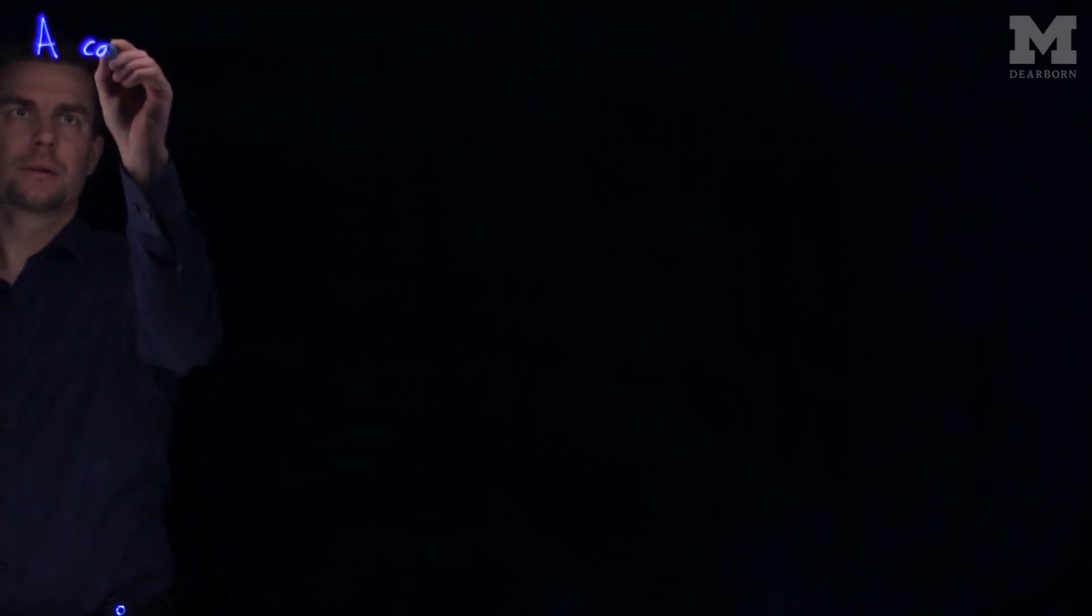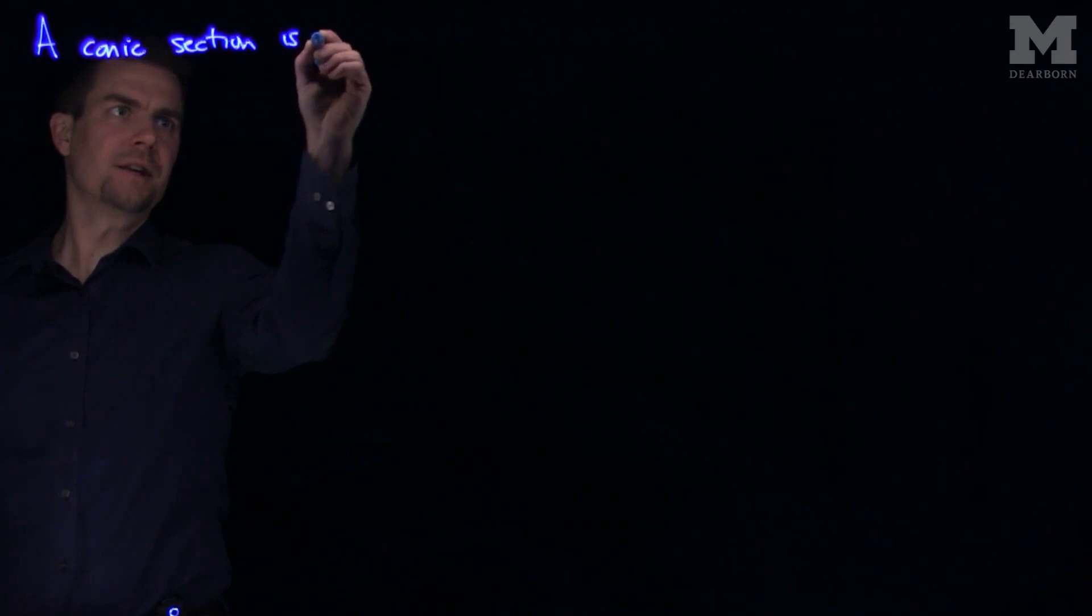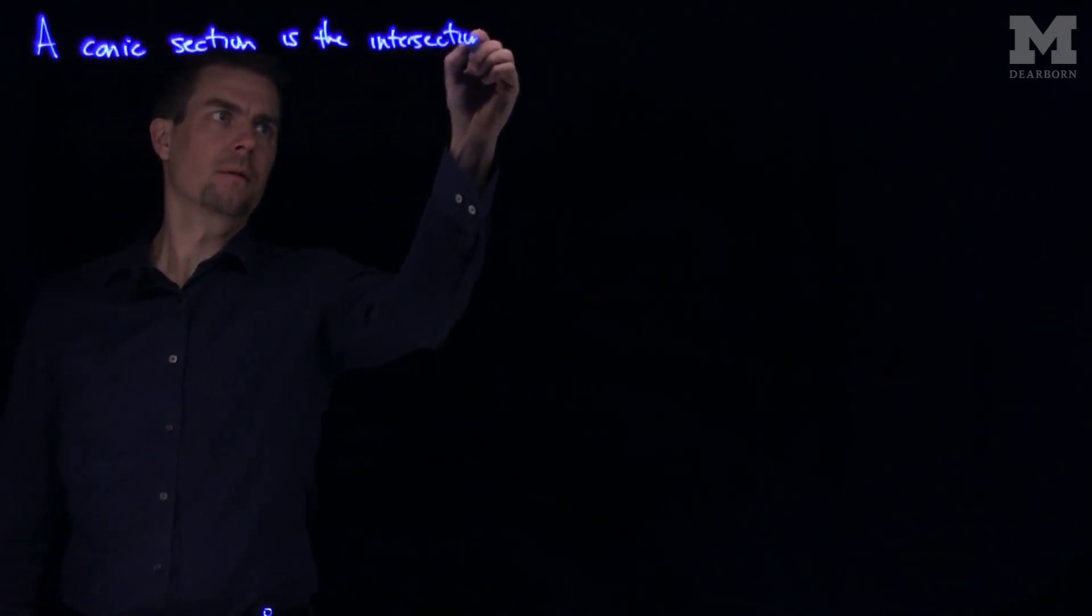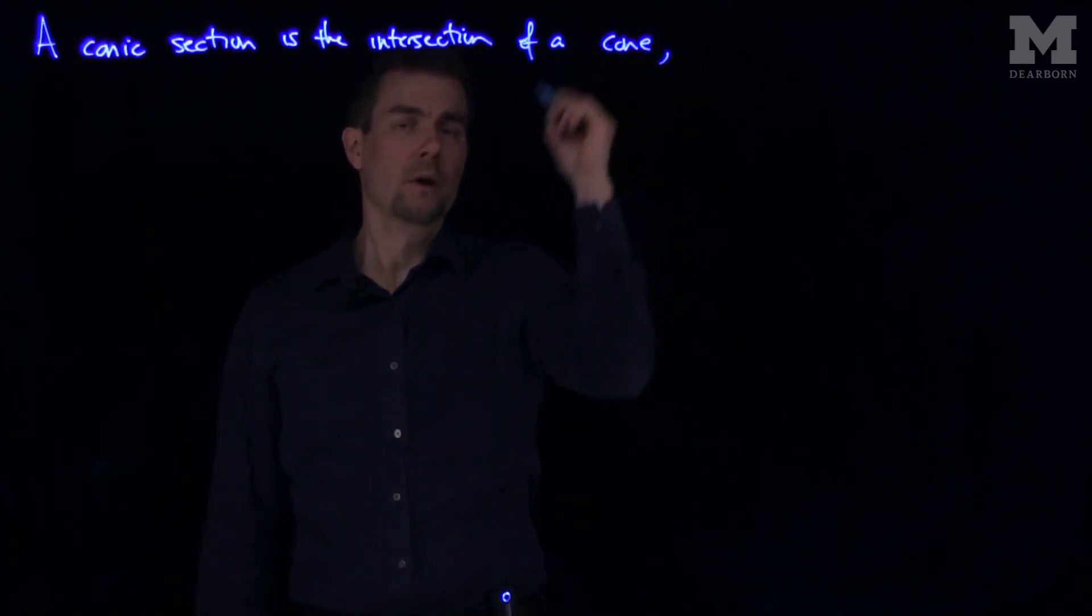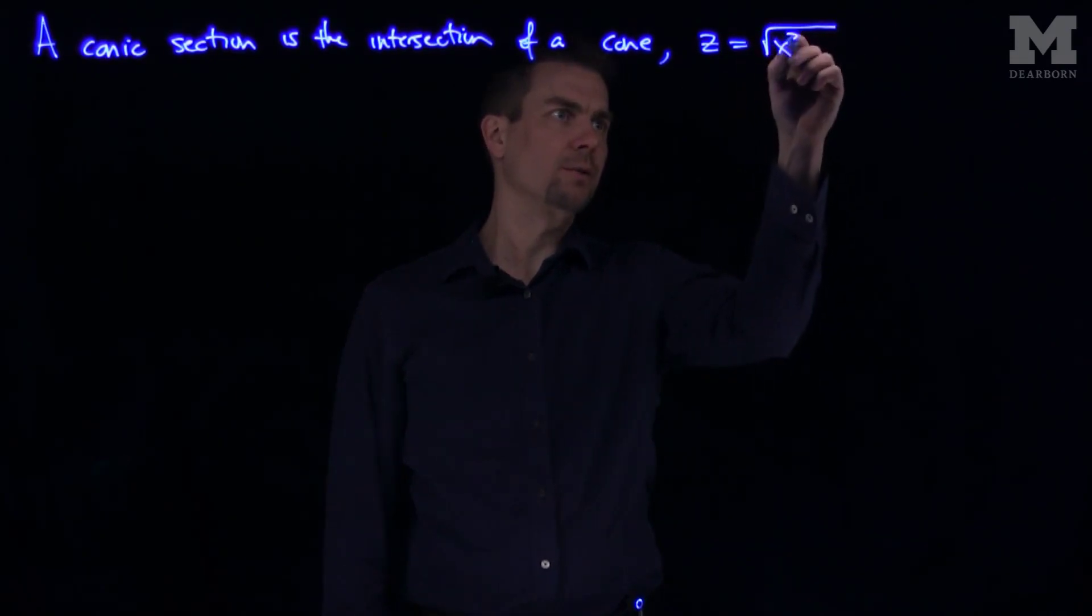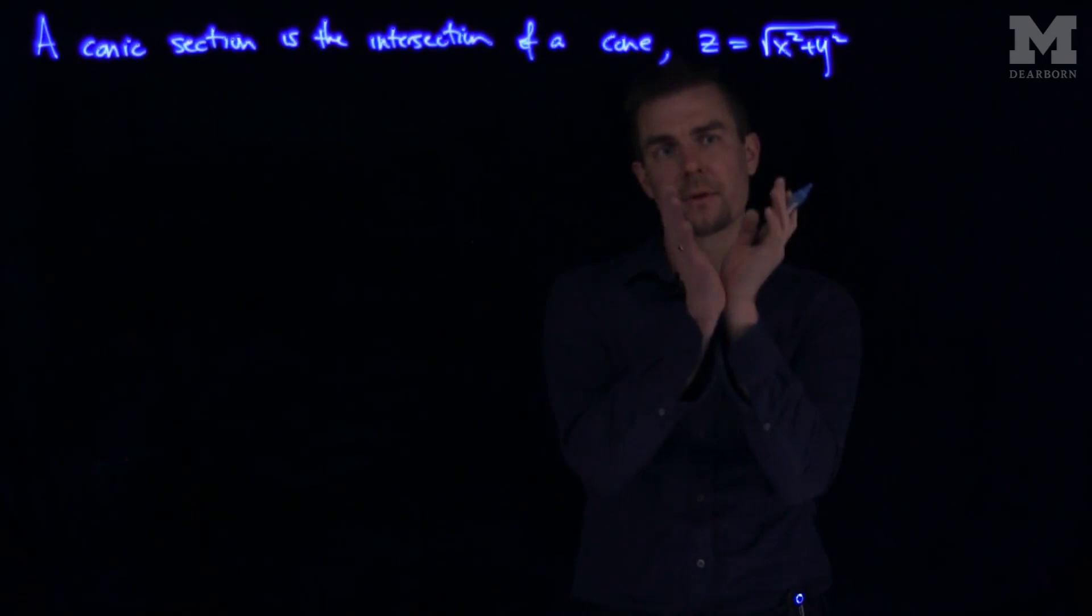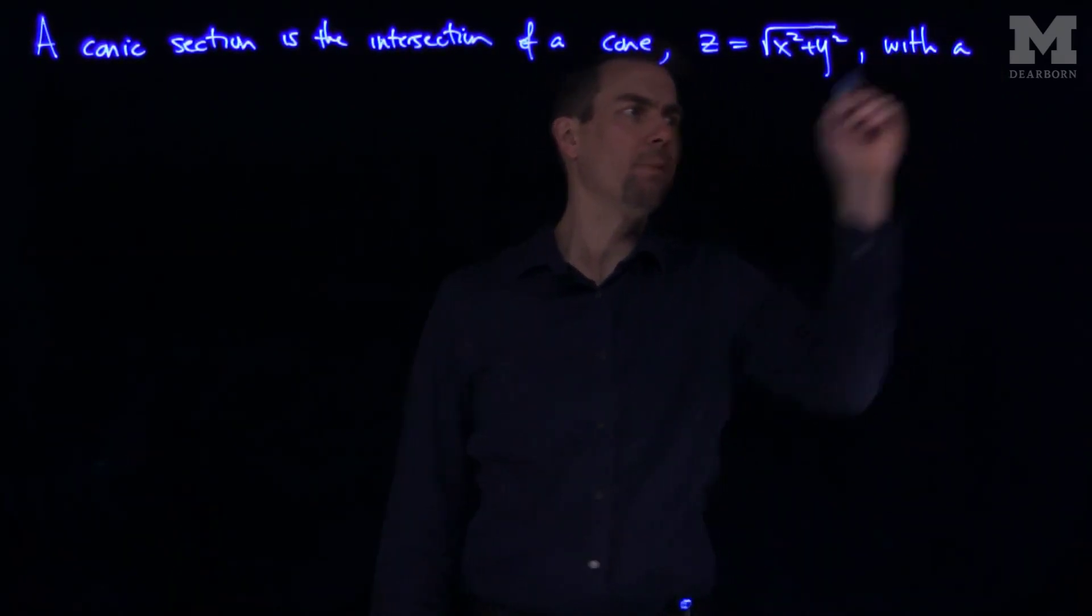A conic section is the intersection of a cone—and we'll say the cone is this form, z equals the square root of x squared plus y squared. For example, that's the top half of the cone—with a plane.